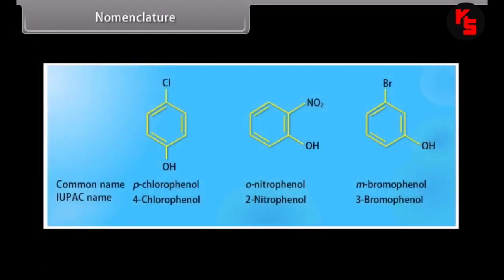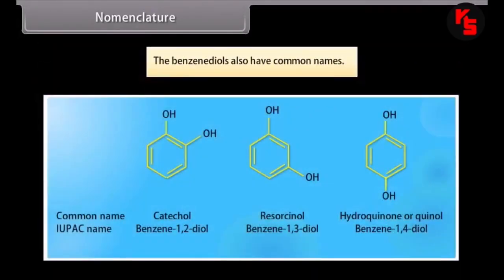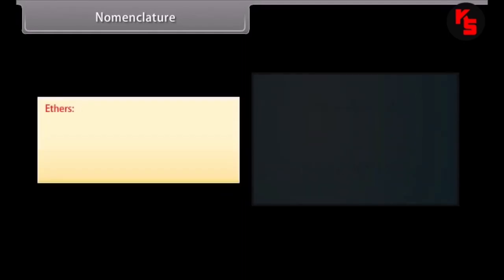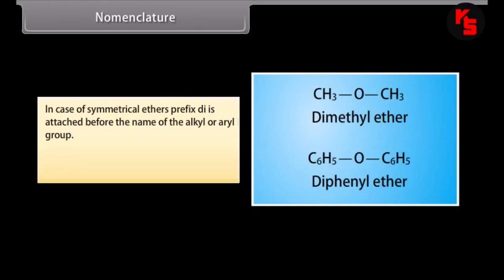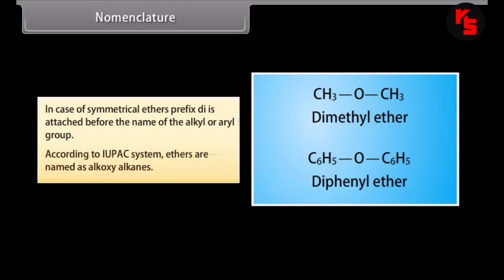The benzene diols also have common names. The common names of ethers are derived by naming the two groups — alkyl and/or aryl — linked to the oxygen atom in alphabetical order, followed by the word ether. In case of symmetrical ethers, the prefix di- is attached before the name of the alkyl or aryl group.